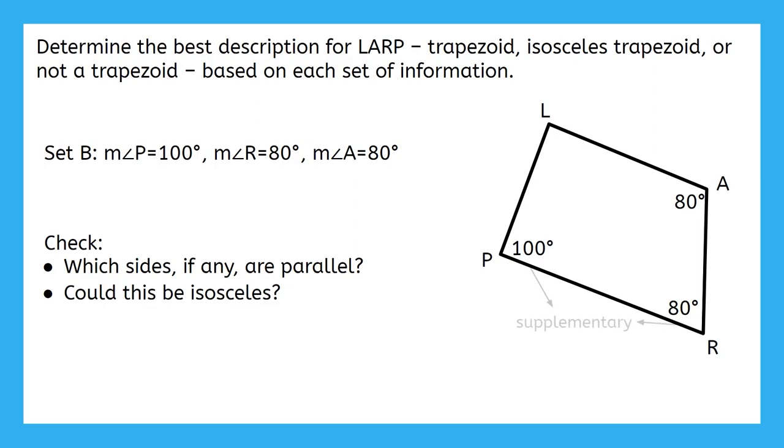Angles P and R are supplementary, since their measures add to 180. That means that LP is parallel to AR. This is because of the consecutive interior angle theorem converse, back from our parallel lines unit. For this to be a trapezoid, only one pair of sides can be parallel. So what about LA and PR? Are those sides parallel too? No, they are not parallel. Angles A and R would be the consecutive interior angles between LA and PR. They are not supplementary, because they only add up to 160 degrees. We can summarize this as only one pair of sides are parallel. Now the only question is, is this a trapezoid, or is it an isosceles trapezoid? What do you think?